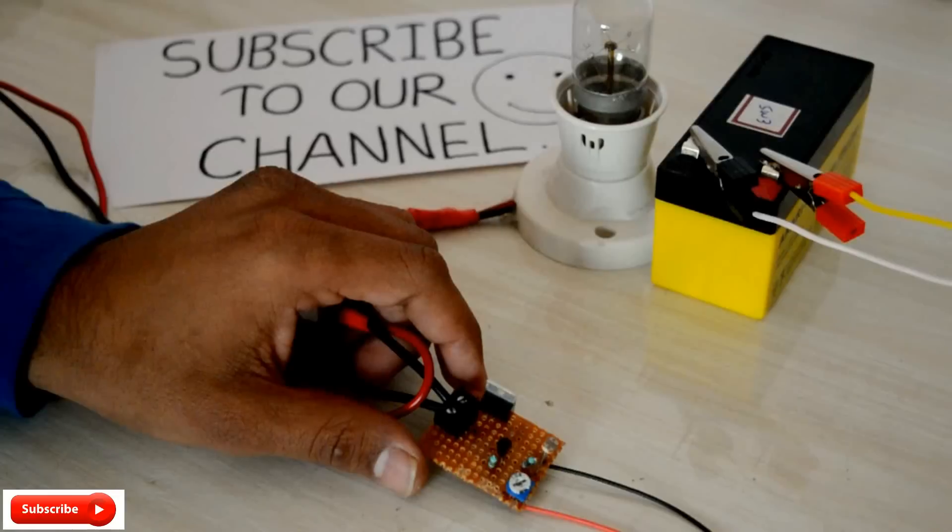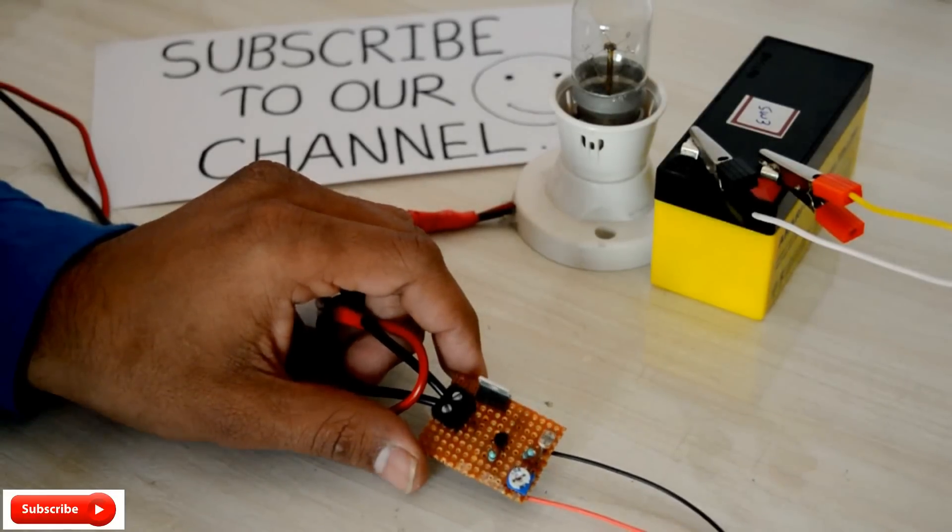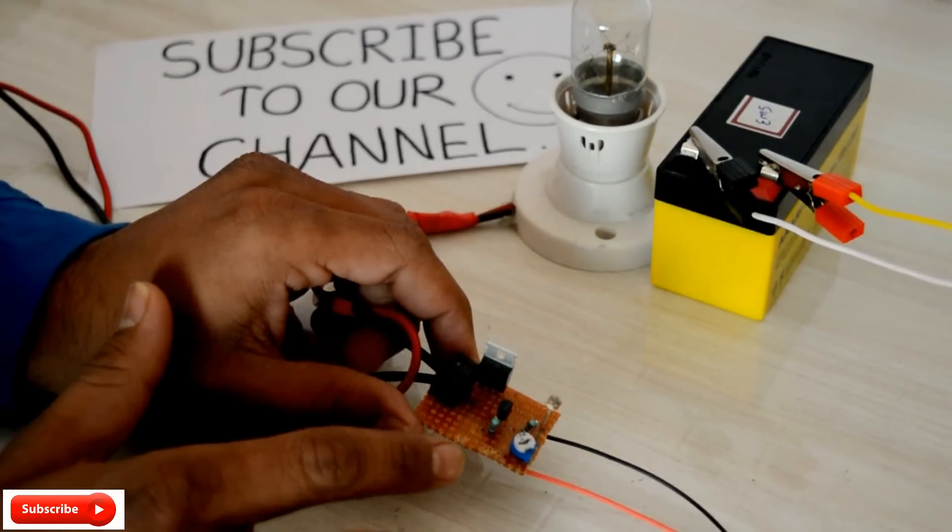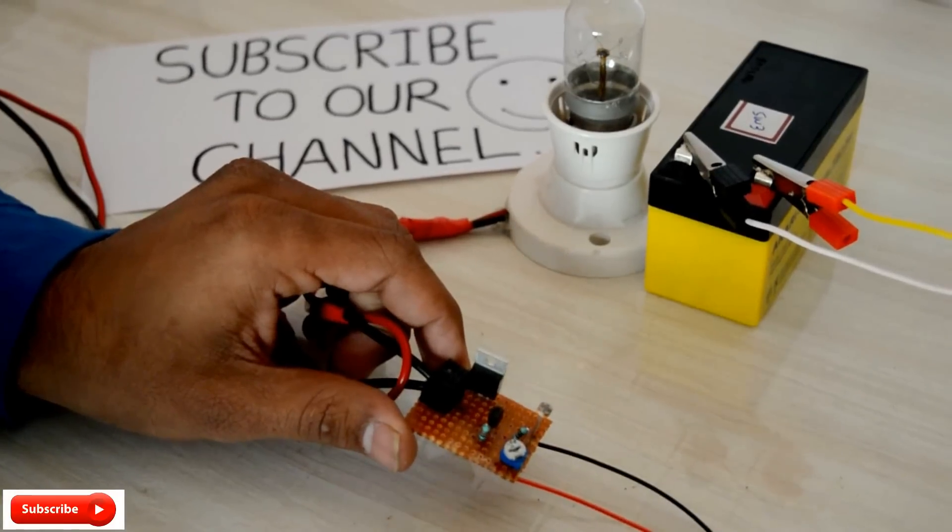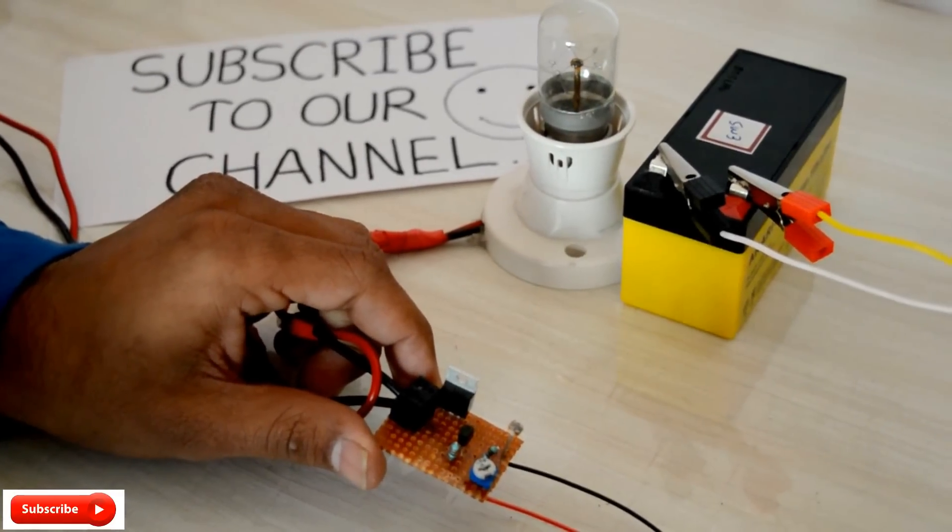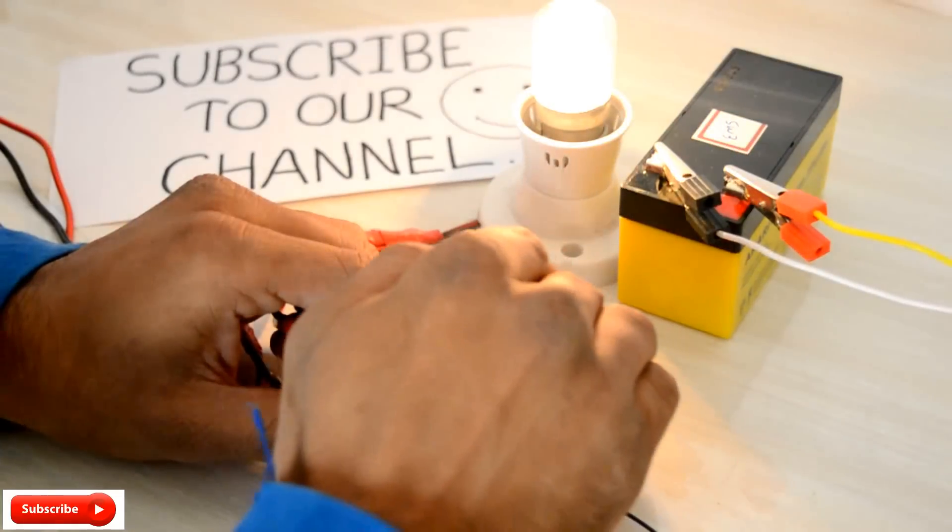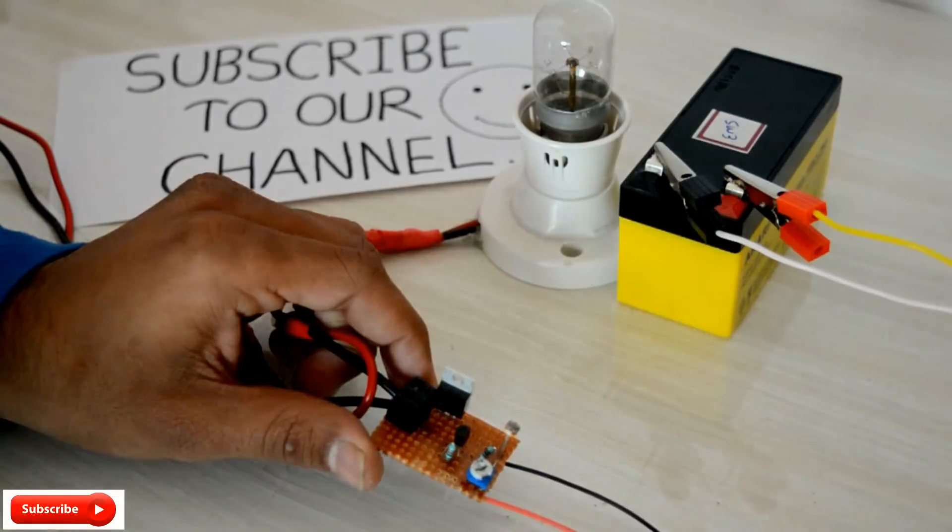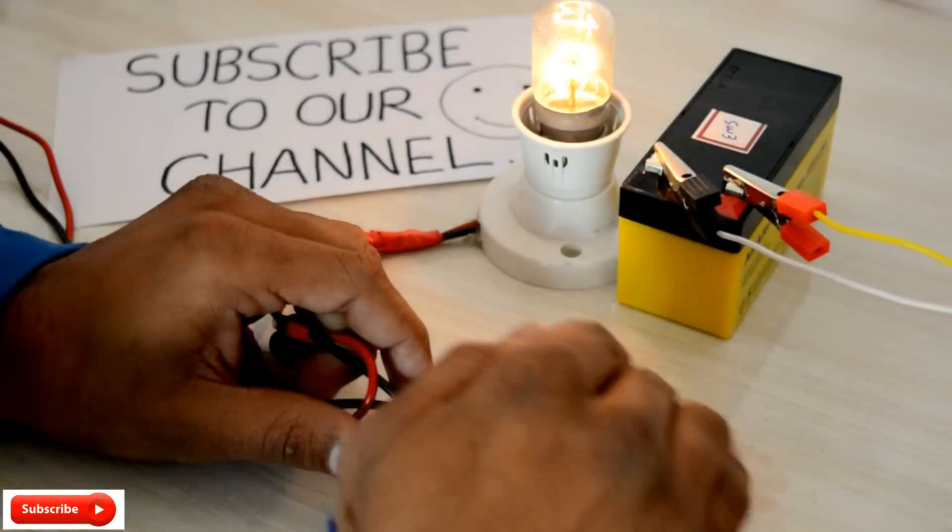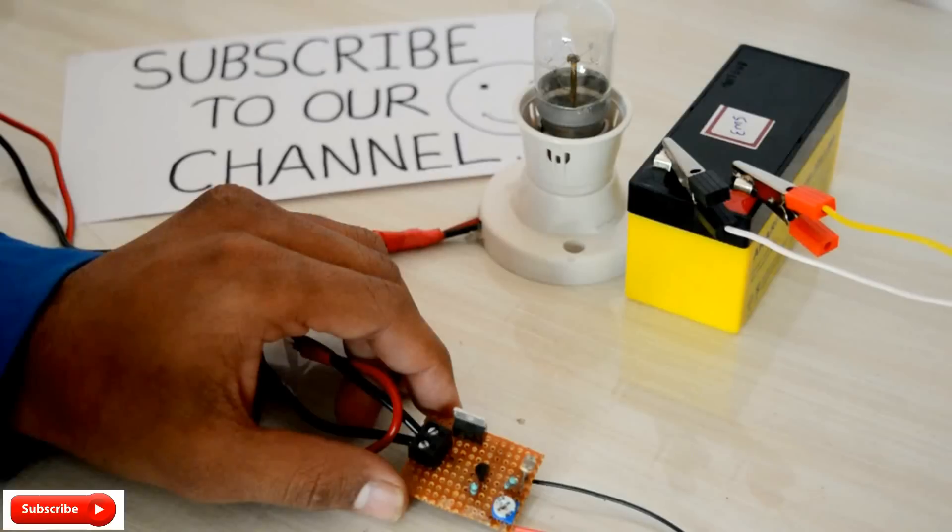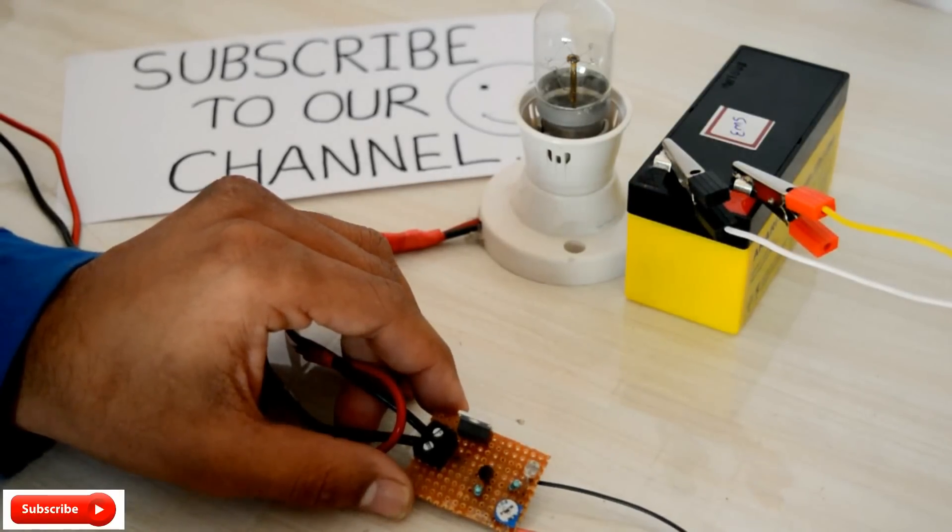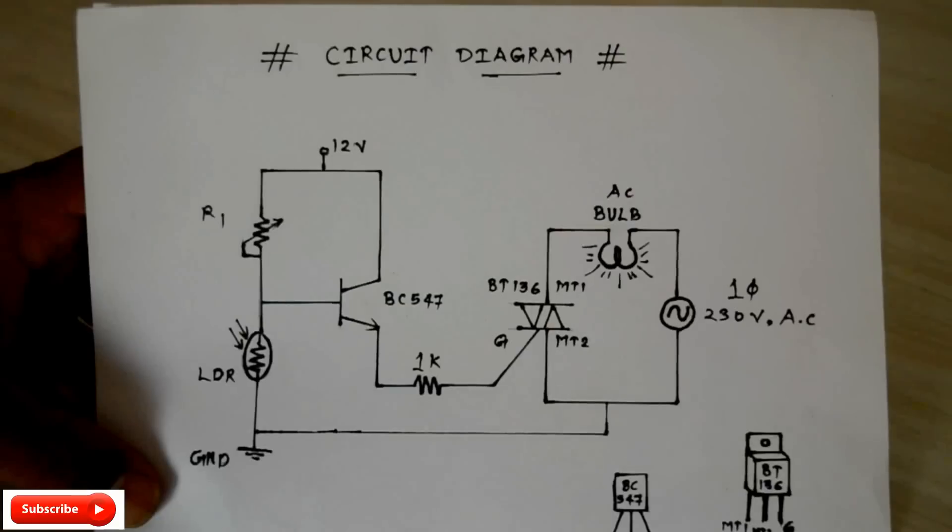This is a real-time prototype of our circuit. See, it's very small compared to others. As we increase the resistance of that LDR by increasing the darkness, the electric bulb is going to be on. If we reduce it, it's going to be off. It's very simple compared to other ones. Let's see how to make this on a breadboard and how to make this as per our requirement.